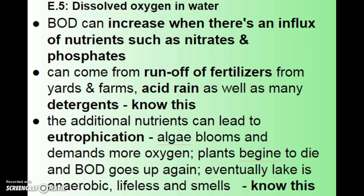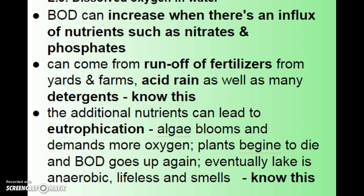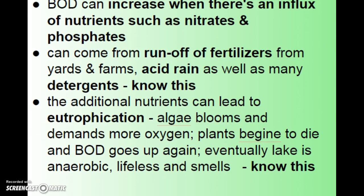The additional nutrients can lead to a process called eutrophication, which is basically a lake or body of water dying. The extra nutrients cause algae to bloom, and when algae bloom they demand more oxygen. As algae demand more oxygen, other plants and animals begin to die. As they die, the BOD goes up again because those plants need to be decomposed. Eventually you end up with a lake that's anaerobic — it has no oxygen left, it's lifeless, and you start getting reduction instead of oxidation, producing very foul smells.